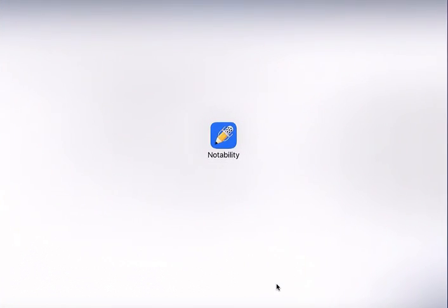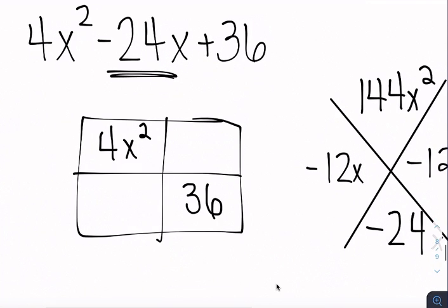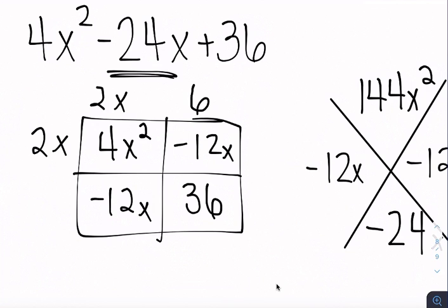So I have negative 12x, negative 12x. Okay. So let's see. I know that I'm going to have an x and an x. I believe this is going to be 2 and 2. And then 6 and 6. Both of these are going to be negative.